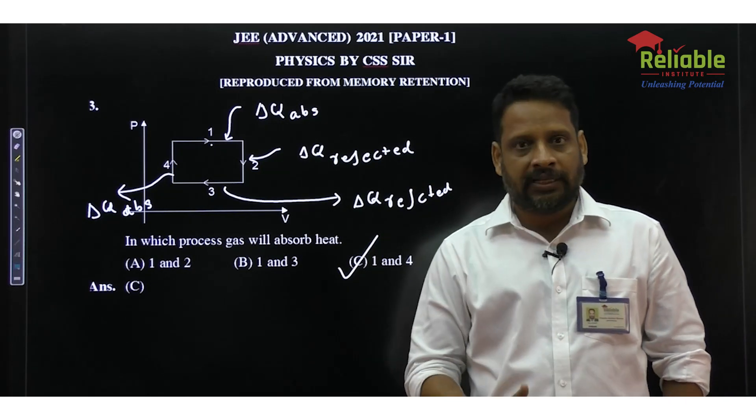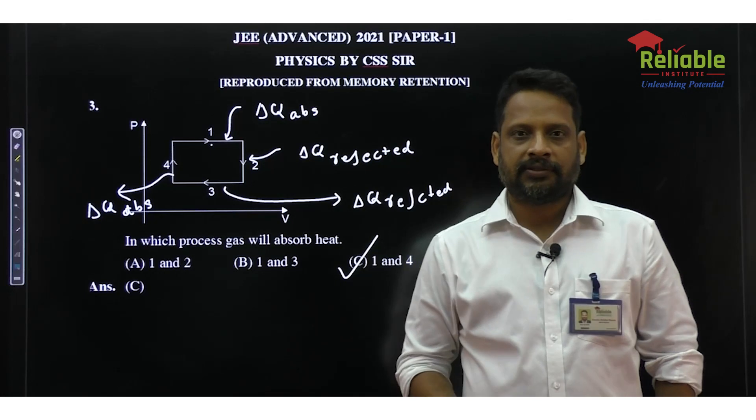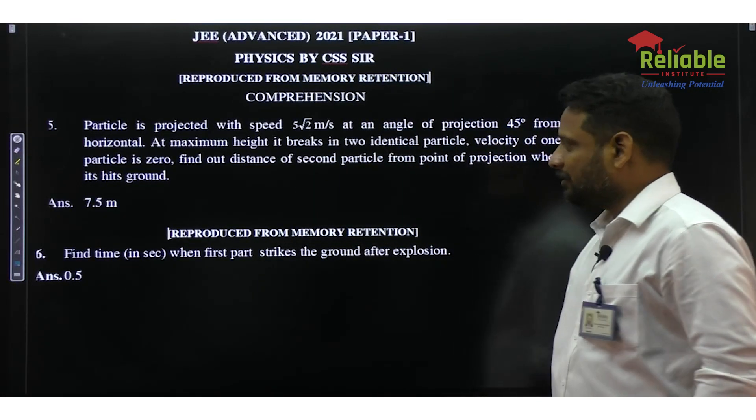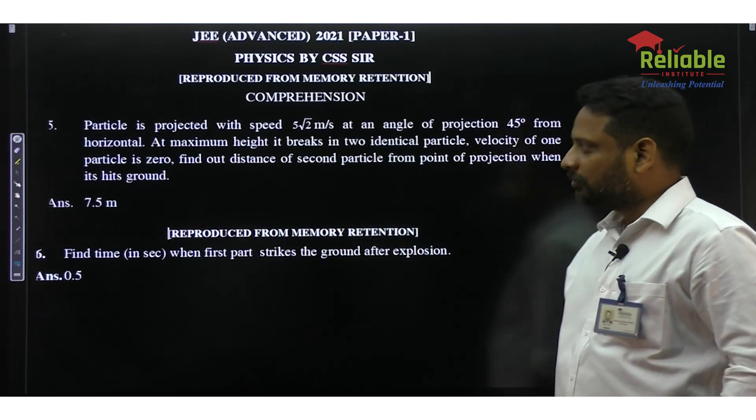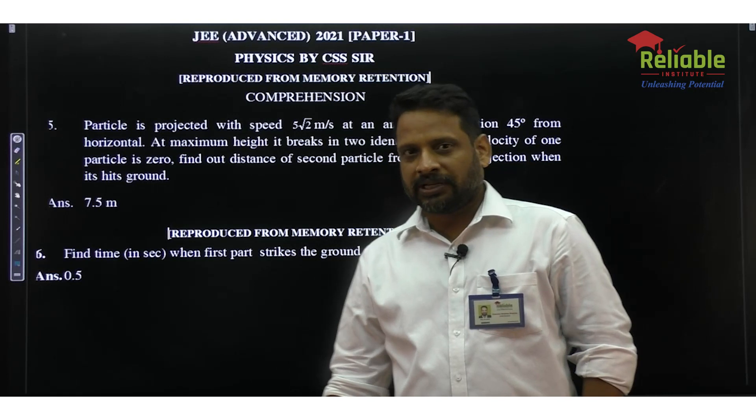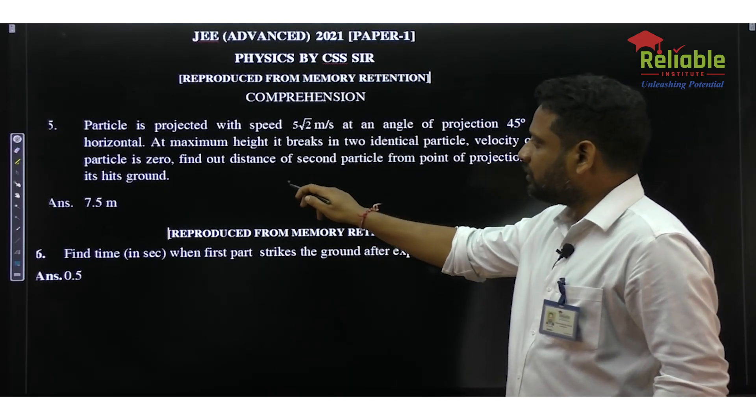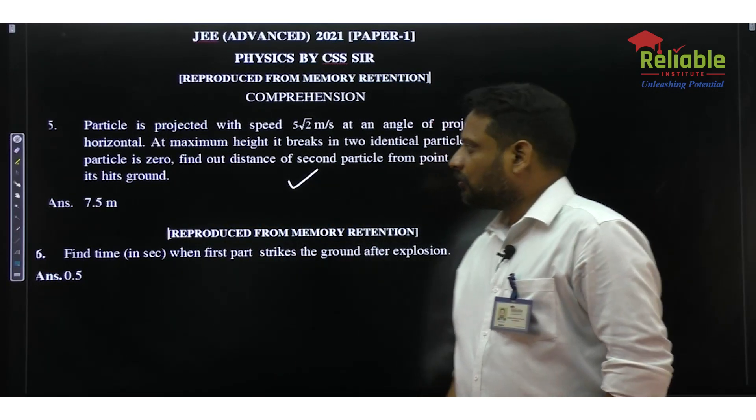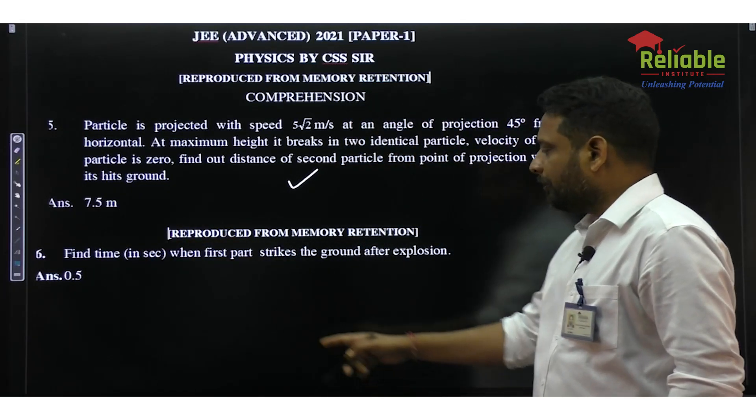As I said earlier, question falls under easy category and the chapter is heat and thermodynamics. There is one more addition to this question which we already discussed. We have question number 17 - this was a comprehension passage question I have already solved, the projectile motion question where we got 7.5 meters.